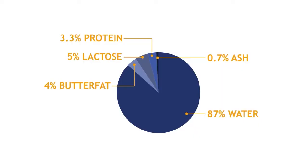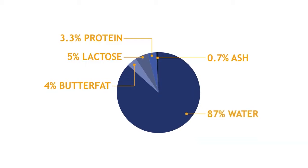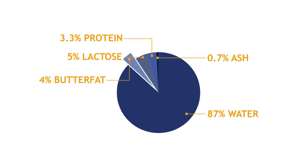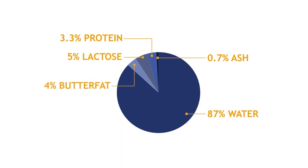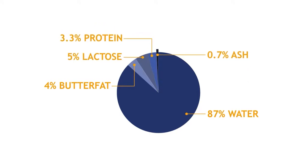The exact percentages vary, but on average milk is 87% water, 4% butterfat, 5% lactose, 3.3% protein, and 0.7% ash.